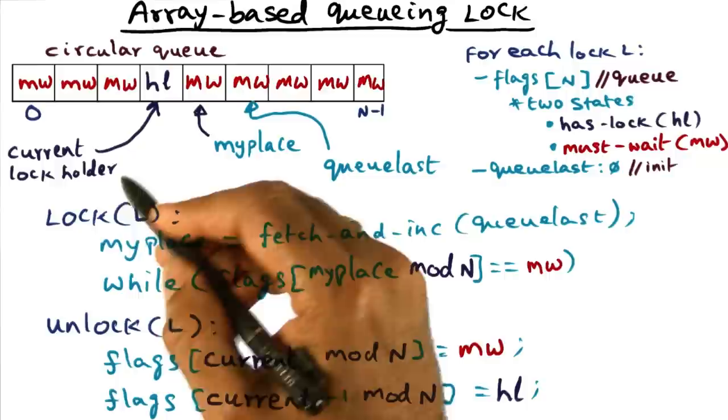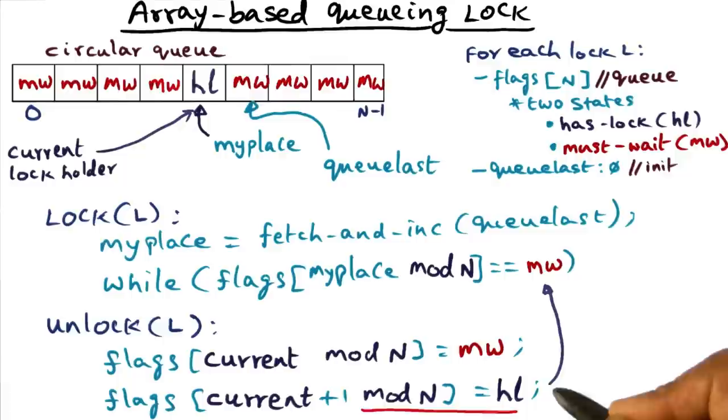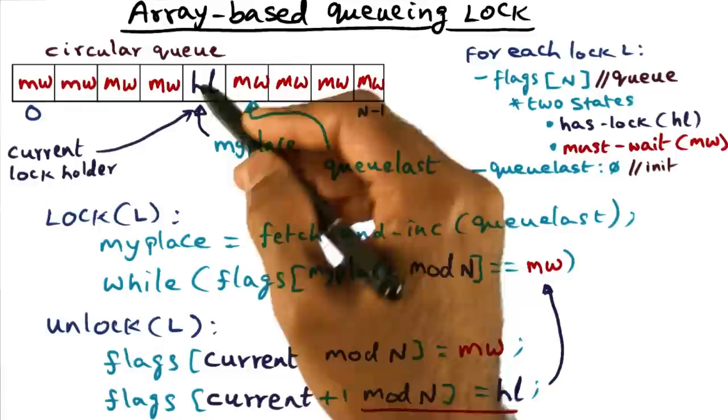Now, this will go on, and eventually, my predecessor will become the current lock holder. And when my predecessor is done using the lock, he'll come around to do an unlock. And when the current lock holder, who is my predecessor, does the unlock operation, that's going to be resulting in a signal for me.